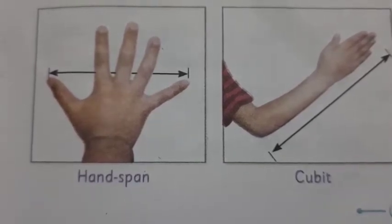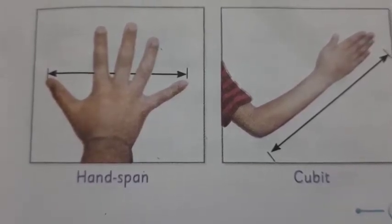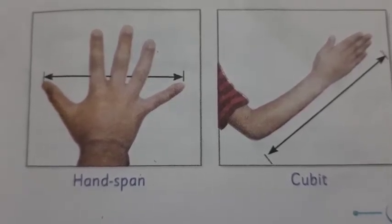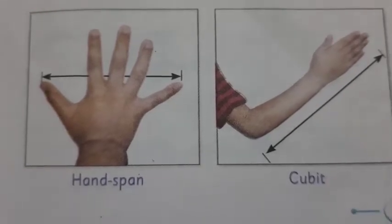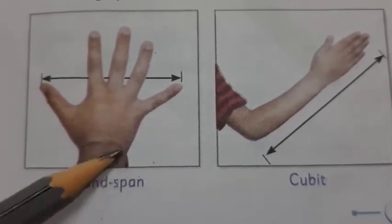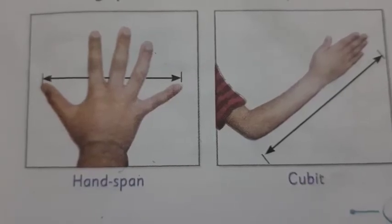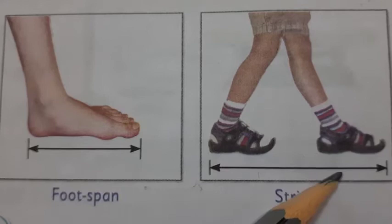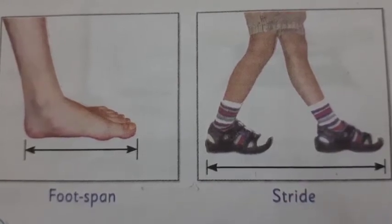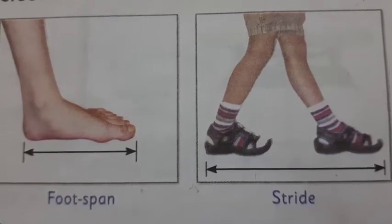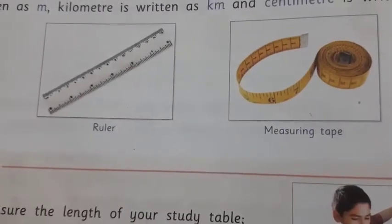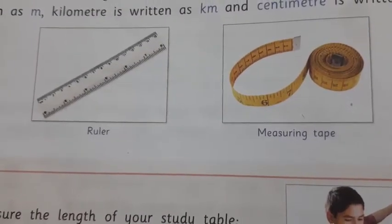Number one: Measurement of Length. Meter is the standard unit to measure length. In early days, people used their body parts to measure length — hand span, cubit, foot span, and stride — to measure different lengths. But this measurement is not accurate as body parts differ from person to person. Therefore, we need a standard unit of measurement.